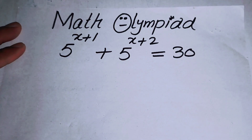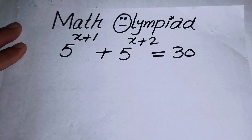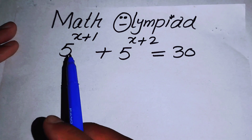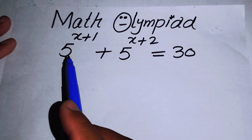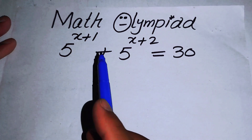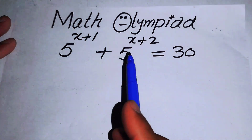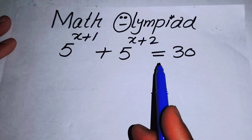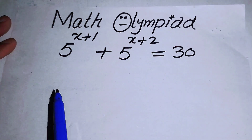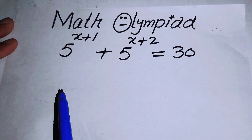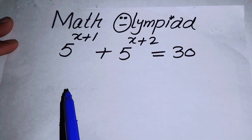Hello everyone, welcome back to the Map of Mathematics. In this video we are going to solve this nice exponential problem: 5 to the power of x+1 plus 5 to the power of x+2 is equal to 30. We will solve this problem for the value of x.